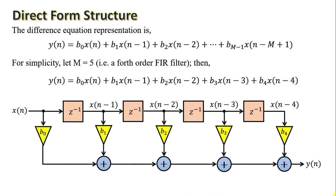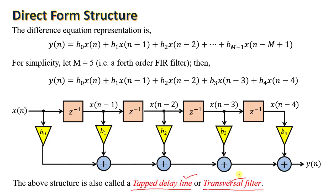This is a B4 filter. The above structure is also known as a tapped delay line or transversal filter, which is the direct form structure of the FIR filter.